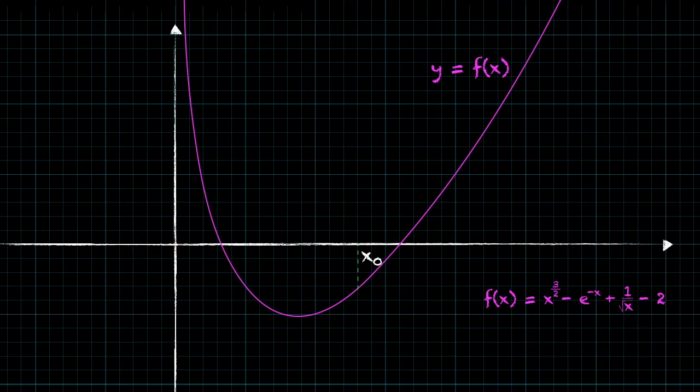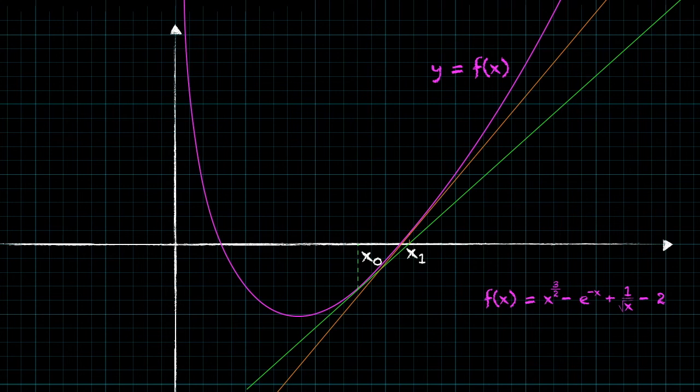And then at the point where it hits the curve, you want to draw a tangent at that point. And then the next value of x is given by the point where this tangent intersects the x axis. Then you want to repeat the process with your new value of x. And as you can see from this diagram, this can converge to the root very quickly.